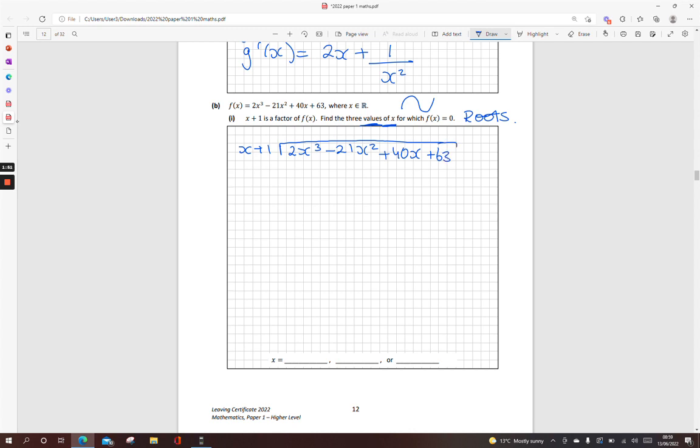This should be something we're perfect at here. So what do you multiply x by to get 2x cubed? 2x squared, and then multiply it down. So we get 2x cubed plus 2x squared. Draw your line, change your signs. And we'll see that process repeats from left to right. So minus 21 minus 2 is minus 23x squared plus 40x plus 63.